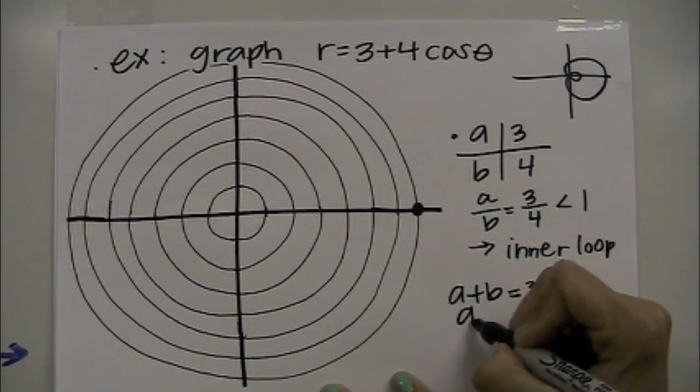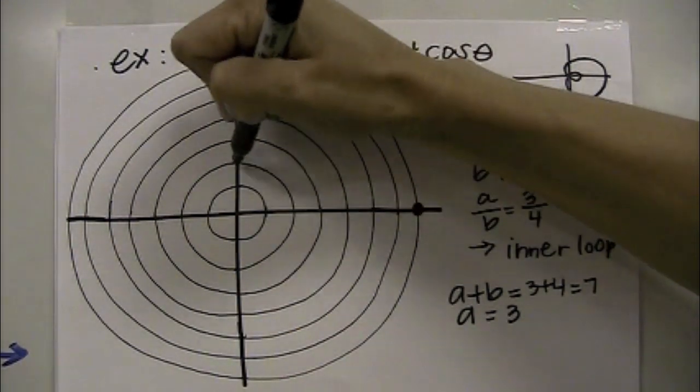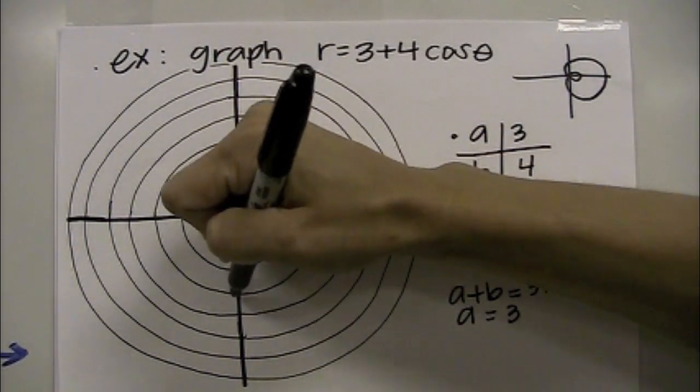Next, we're going to look at a. A is just 3, that's how far it goes in the opposite axis. So 1, 2, 3, 1, 2, 3.